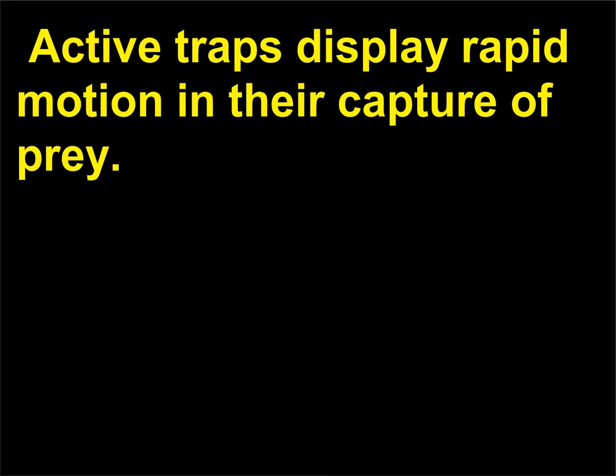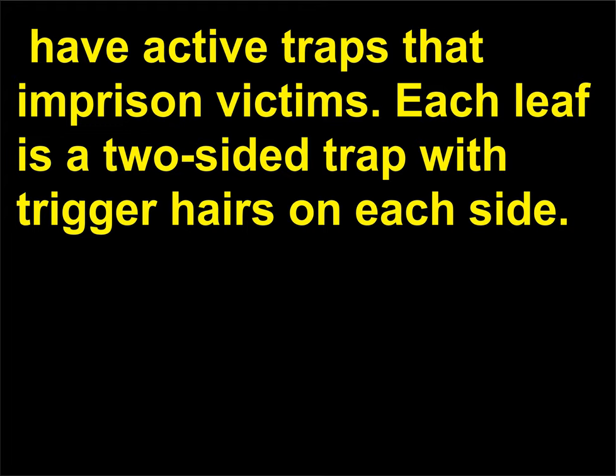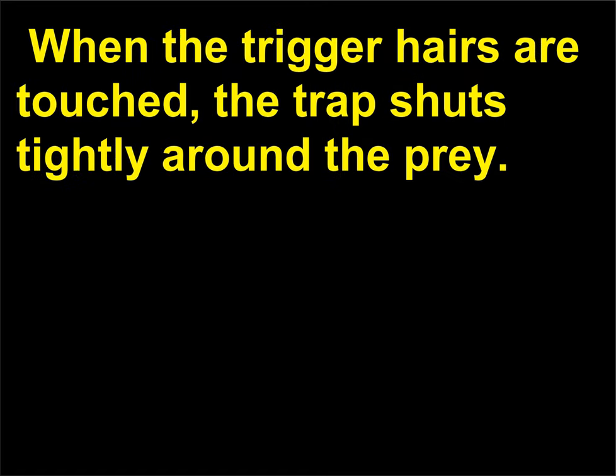Active traps display rapid motion in their capture of prey. The Venus flytrap (Dionaea muscipula) and the bladderwort (Utricularia vulgaris) have active traps that imprison victims. Each leaf is a two-sided trap with trigger hairs on each side; when the trigger hairs are touched, the trap shuts tightly around the prey.